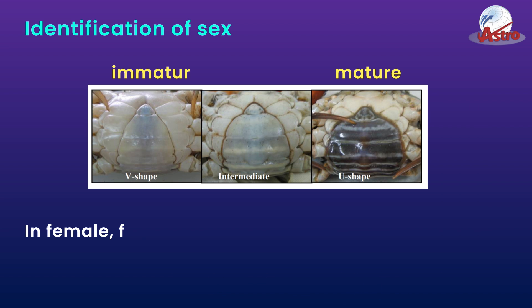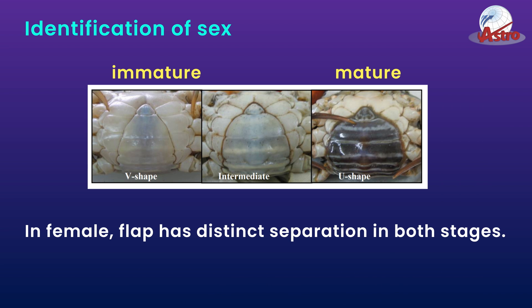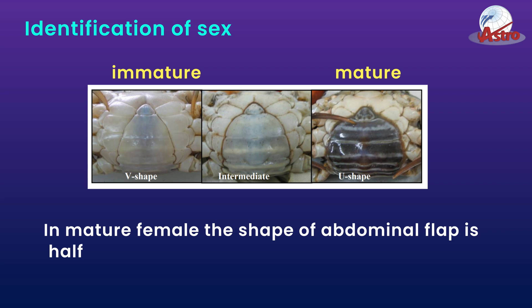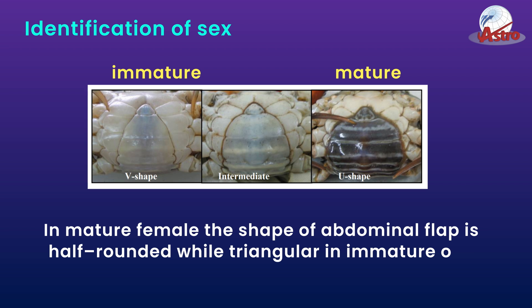In females, the flap has distinct separation in both stages. In the mature female, the shape of the abdominal flap is half-rounded, while it is triangular in the immature one.